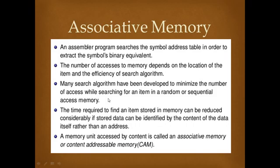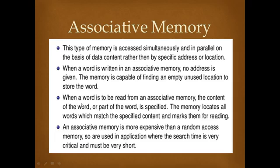In associative memory, searching is performed with the help of content. For example, if we have data x at location A and data y at location B, the data is searched using x or y directly, not using A or B. This type of memory is accessed simultaneously and in parallel on the basis of data content rather than the specific address. When a word is written in associative memory, no address is given — the memory finds an empty location and stores the word.